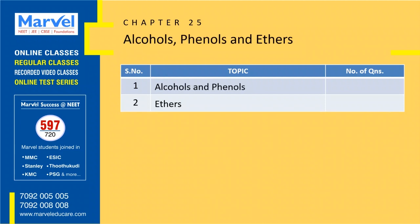Next topic: Alcohols, Phenols and Ethers — 21 questions from the last 8 years. The first topic has 15 questions and the second has 6 questions. You can expect either 1 or 2 questions. This chapter is very important — if you score well here, you can expect 4 to 8 marks. Make Alcohols, Phenols and Ethers stronger.